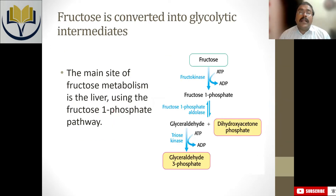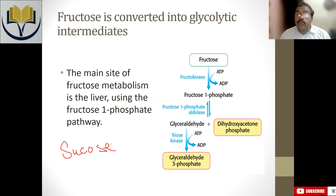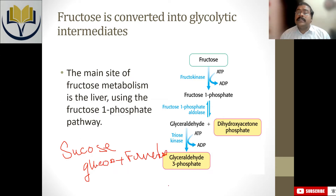Fructose is converted into glycolytic intermediates. Fructose is a very important intermediate because, in terms of sugar, we are having sucrose. Sucrose is a disaccharide composed of two sugars — one is glucose and another is fructose. When sucrose is metabolized in our body, which enzyme is responsible for the degradation of sucrose? That is a question for you — please write it in the chat box.